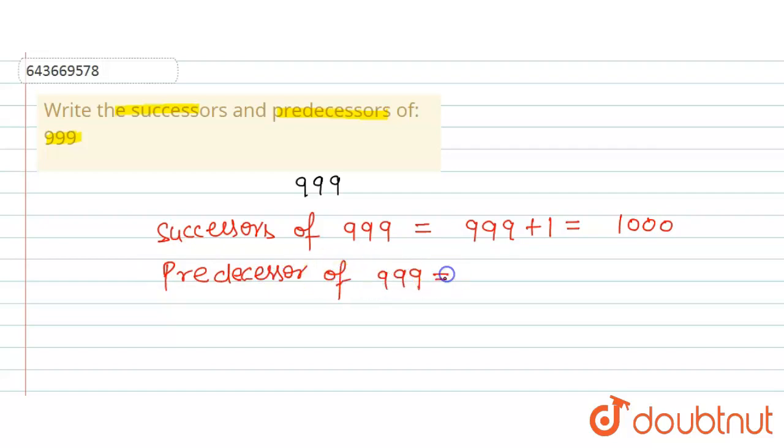Predecessor of 999 means the number which comes just before 999. This is a whole number, so we will subtract. That means for the number just before 999, we will subtract 1.